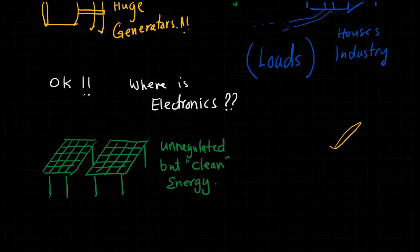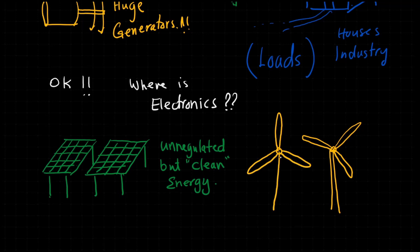Photovoltaic panels produce clean but unregulated DC energy. Wind turbines also produce clean but unregulated AC energy.